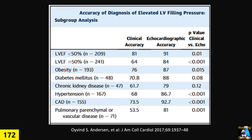In other patient groups — overweight patients, diabetics, those with chronic kidney disease, hypertension, and those with pulmonary disease like COPD — the accuracy drops significantly.